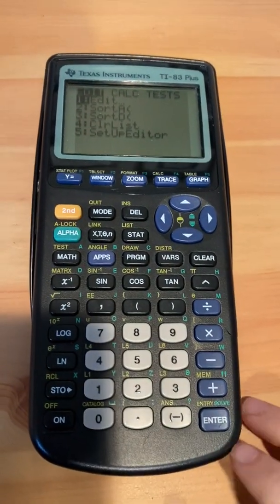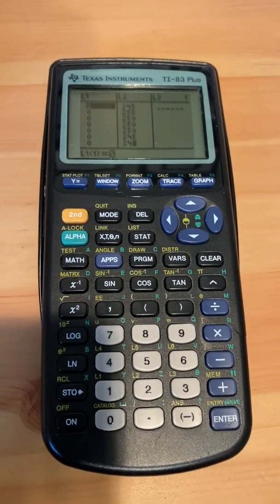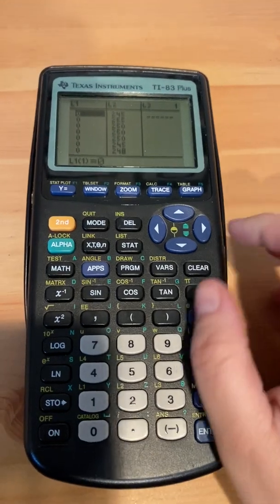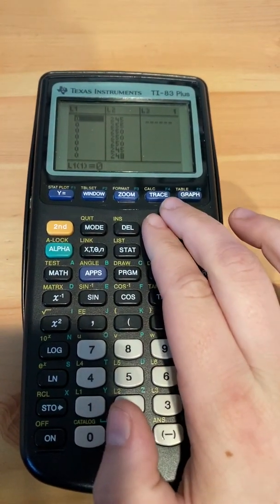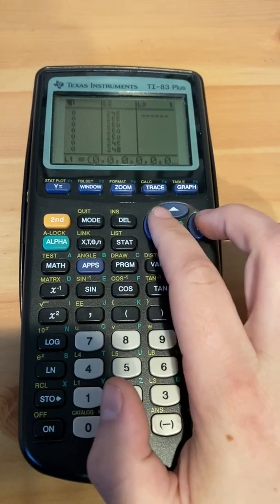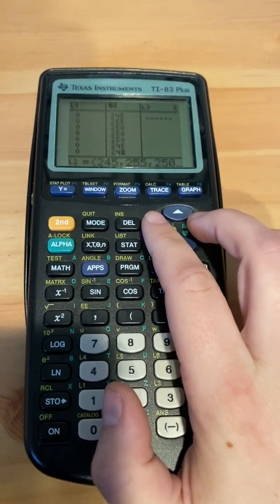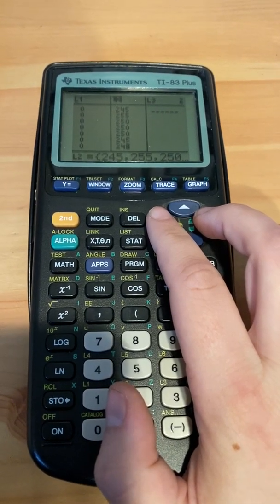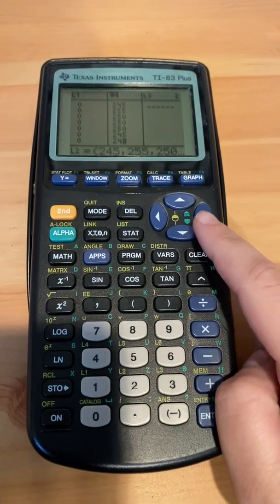All right, press enter. All right, so now we are in our lists. So we have our data for list one, we have our data for list two. Remember, list one is the tapping time, list two is the amount of soda that is left in the can.